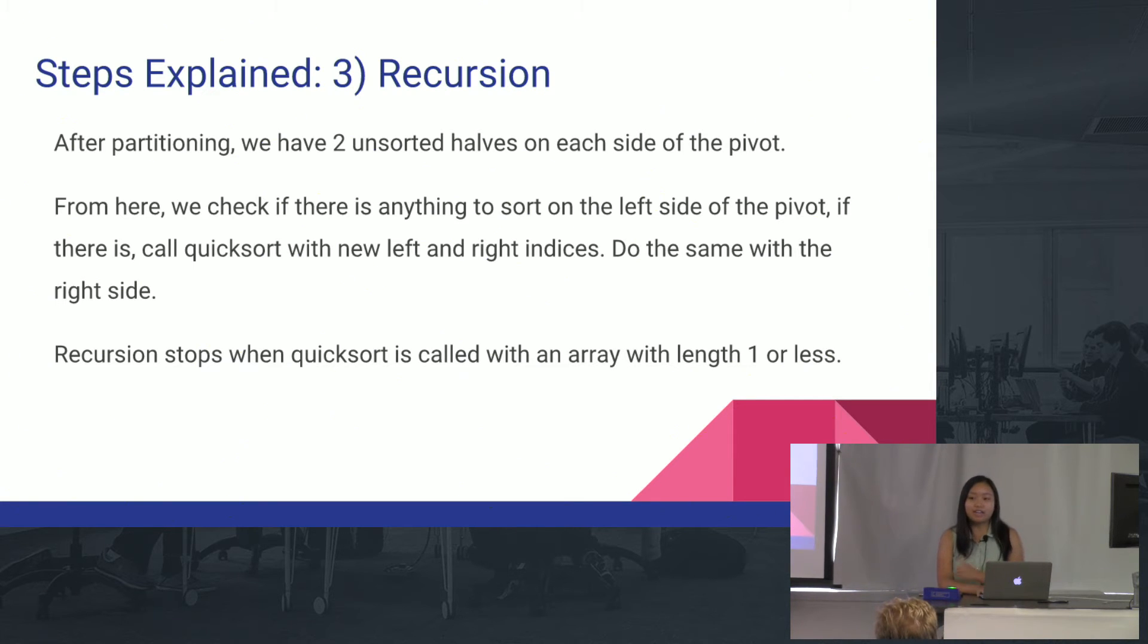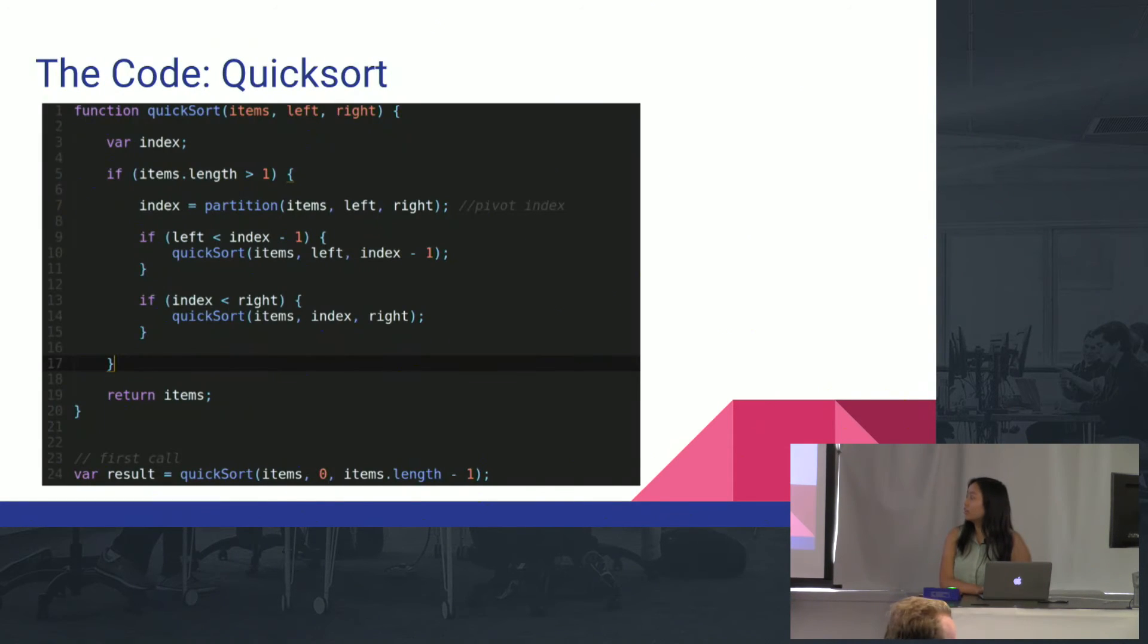So you first have to check if there is anything left on either side, and if there is, you can call the recursive step, but if there isn't, you don't do it. Recursion stops when quicksort is called with an array with length one or less. So this is the code for it.